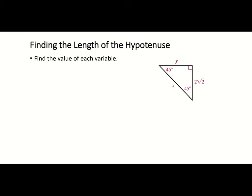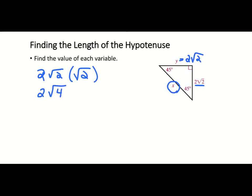Here we want to find x and y. We know one leg is 2√2, so the other leg y is also 2√2. For x, the hypotenuse is the leg times the square root of 2, so it's 2√2 times √2. That gives us 2 times the square root of 4, and since √4 = 2, we get 2 times 2, so the hypotenuse x equals 4.